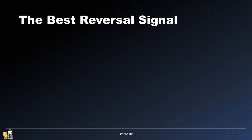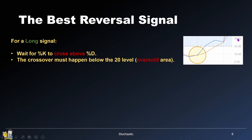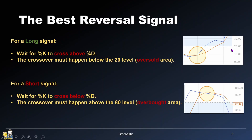For a long signal, you need to wait for %K to cross above %D, and it's very important that this crossover happens below the 20 level, meaning in the oversold area. On the other hand, for a short signal, you wait for %K to cross below %D, and this crossover must occur above the 80 level, which corresponds to the overbought area.